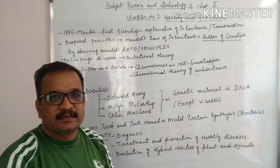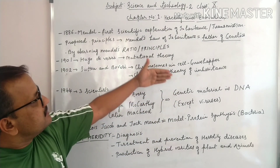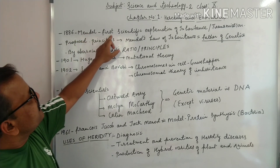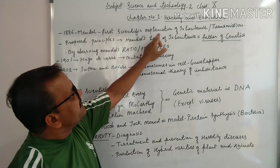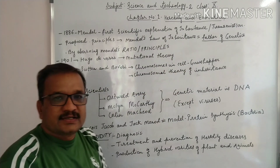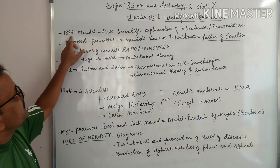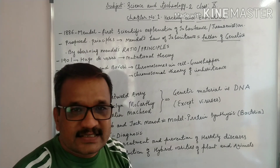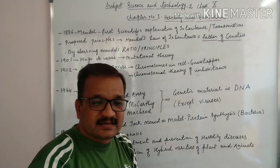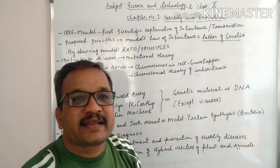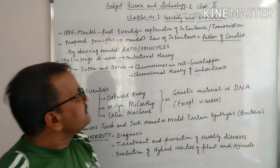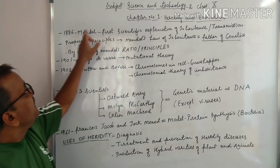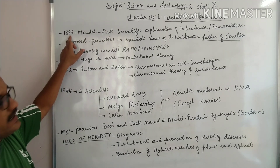In 1861, Mendel gave the first scientific explanation of inheritance. Inheritance means transmission of character from one generation to another. This was the scientific explanation given by Mendel.